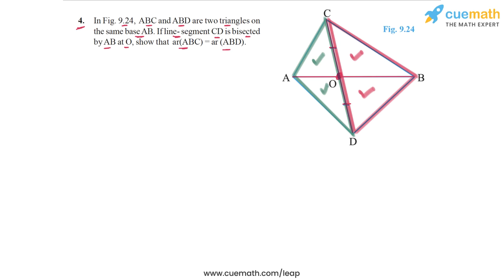This basically means that if we add the corresponding parts, if we add AOC and BOC and if we add AOD and BOD, we will get the same sum, which means that the area of triangle ABC and the area of triangle ABD will be equal.